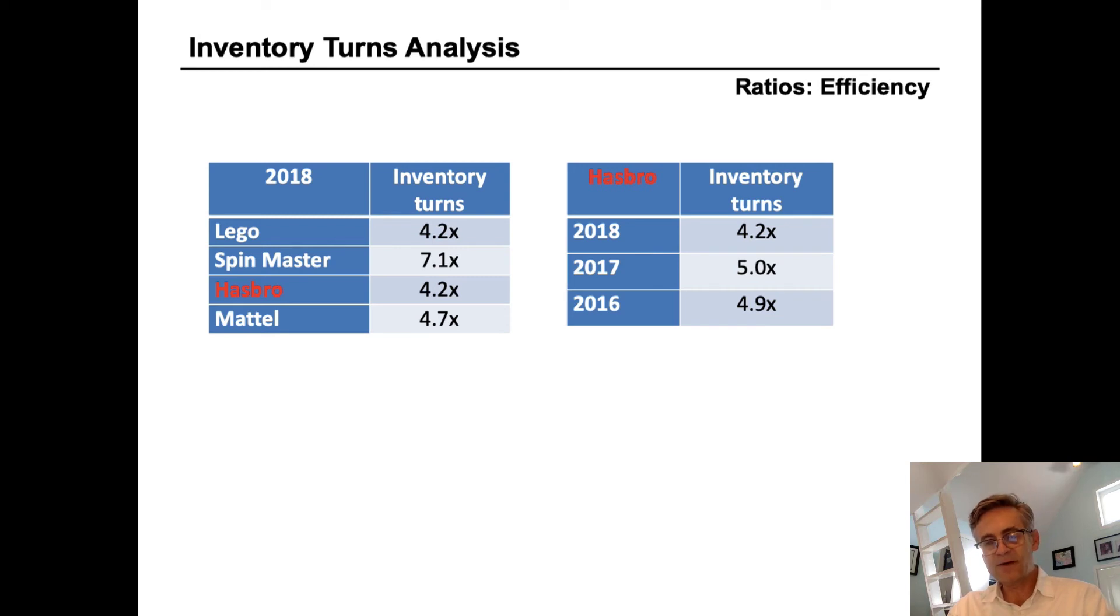We can look at Hasbro on the right hand side of how they've trended over time. And in fact, Hasbro's inventory turns have been closer to five for the last two years at 4.9 and 5.0 in 2016 and 2017 respectively. Now they're at 4.2. So we might be a little bit concerned about building inventory amounts and we would take a closer look into that.